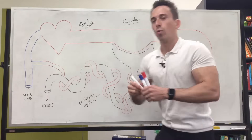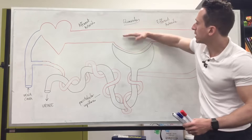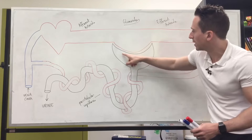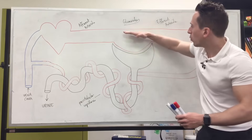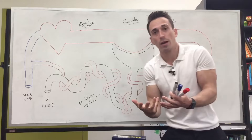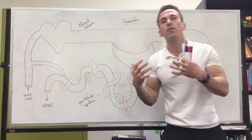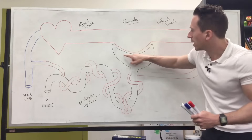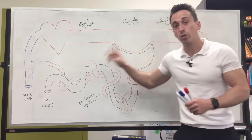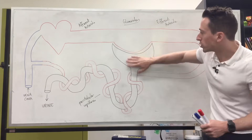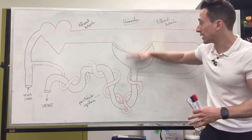Here at the glomerulus — afferent arteriole, glomerulus — things are being pushed out of the blood into a capsule called the renal capsule. What's being pushed out is everything small enough: no cells, no proteins, but basically everything else is being pushed into this renal capsule and moving through the tubules of the nephron. No gas exchange is happening at this area.